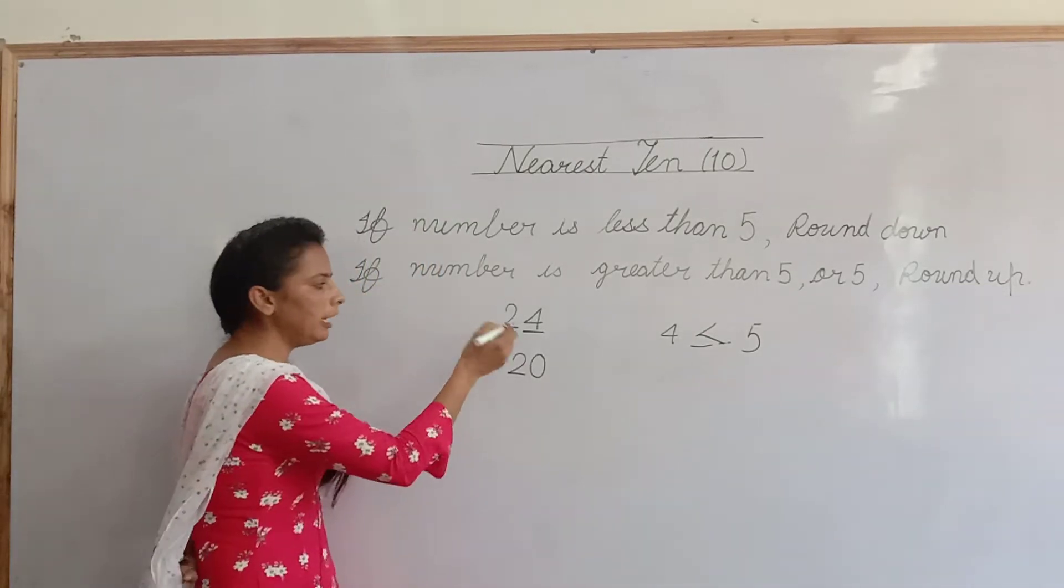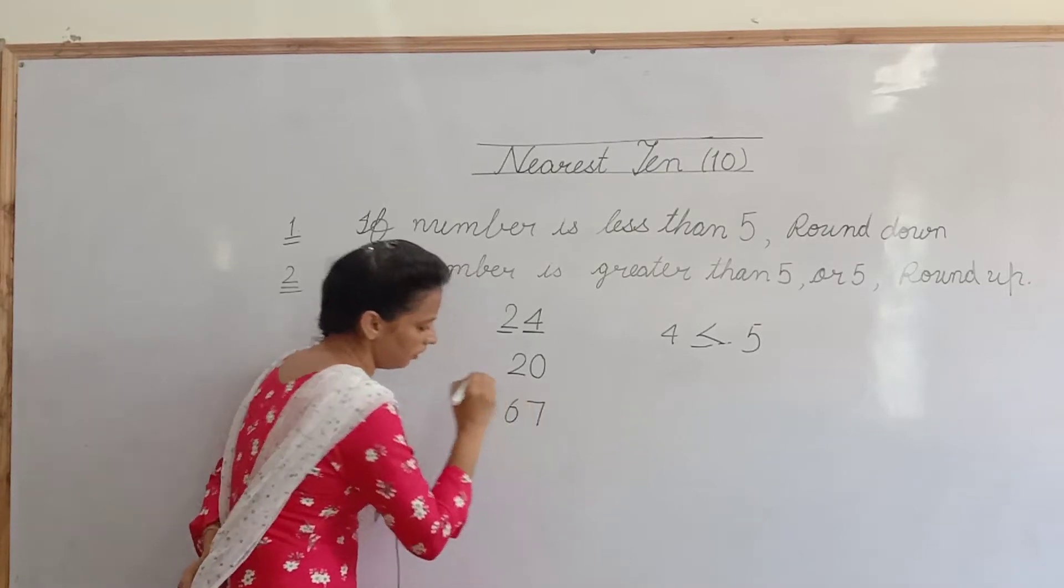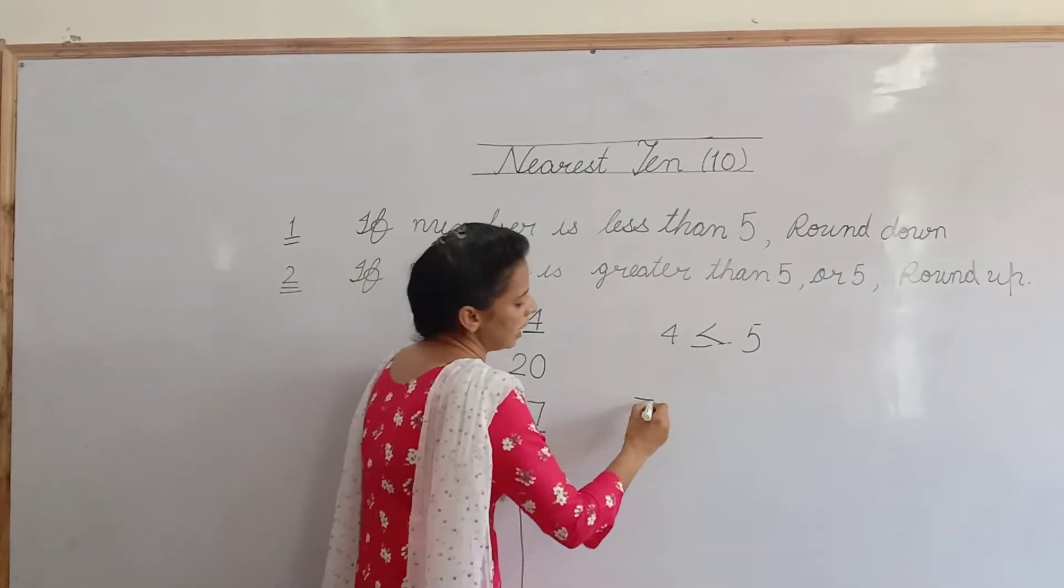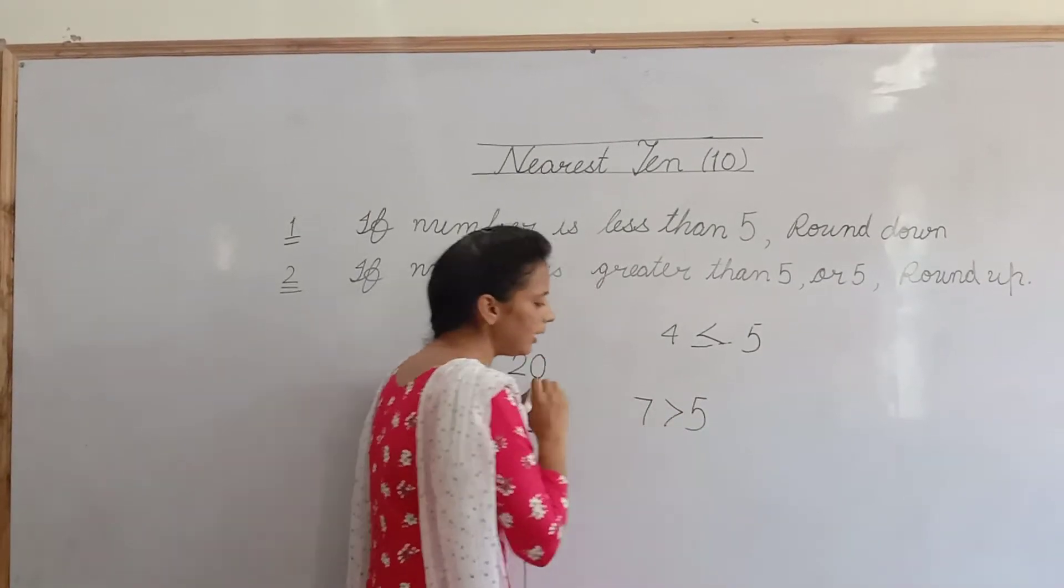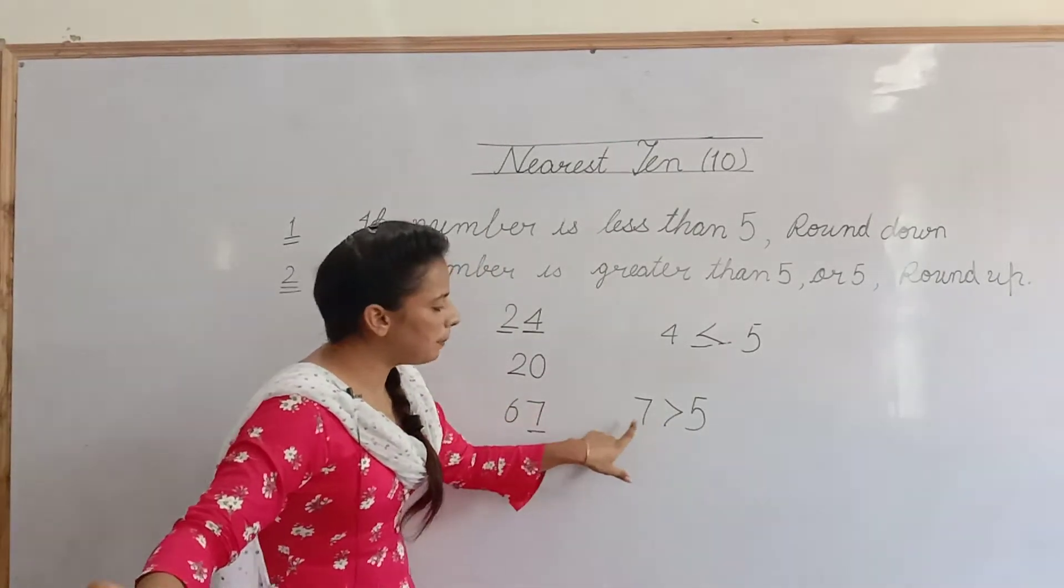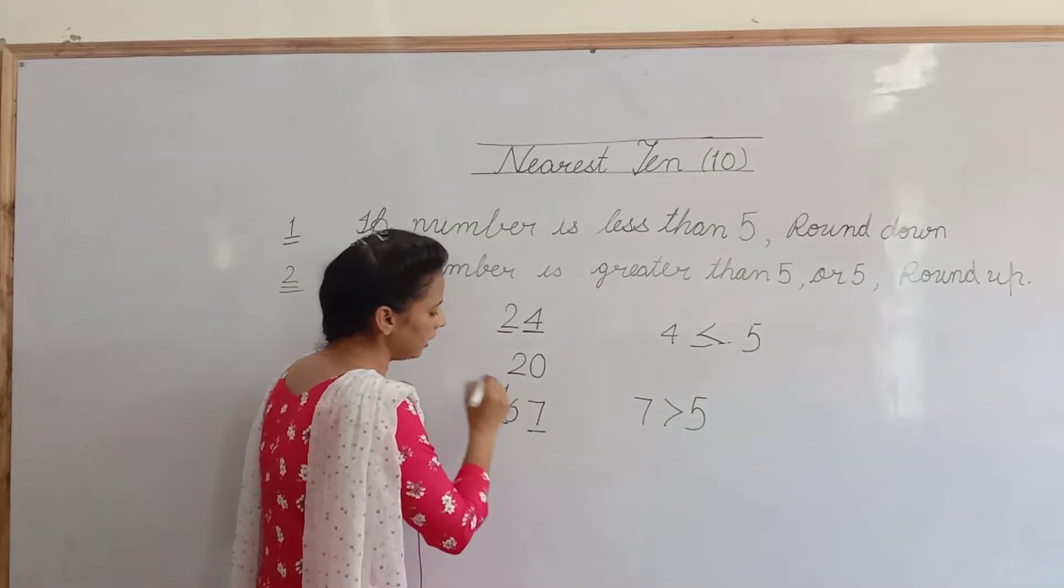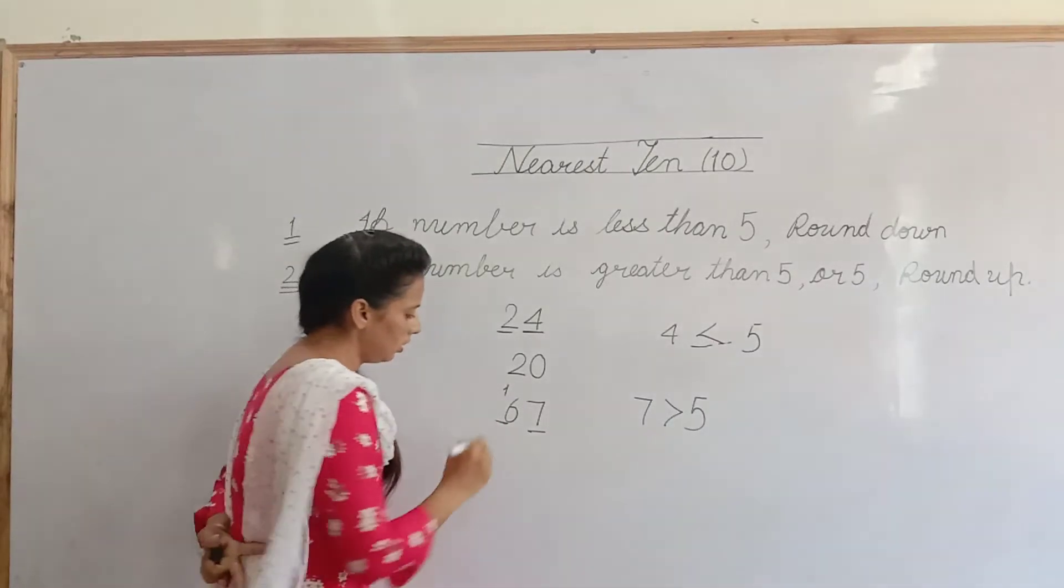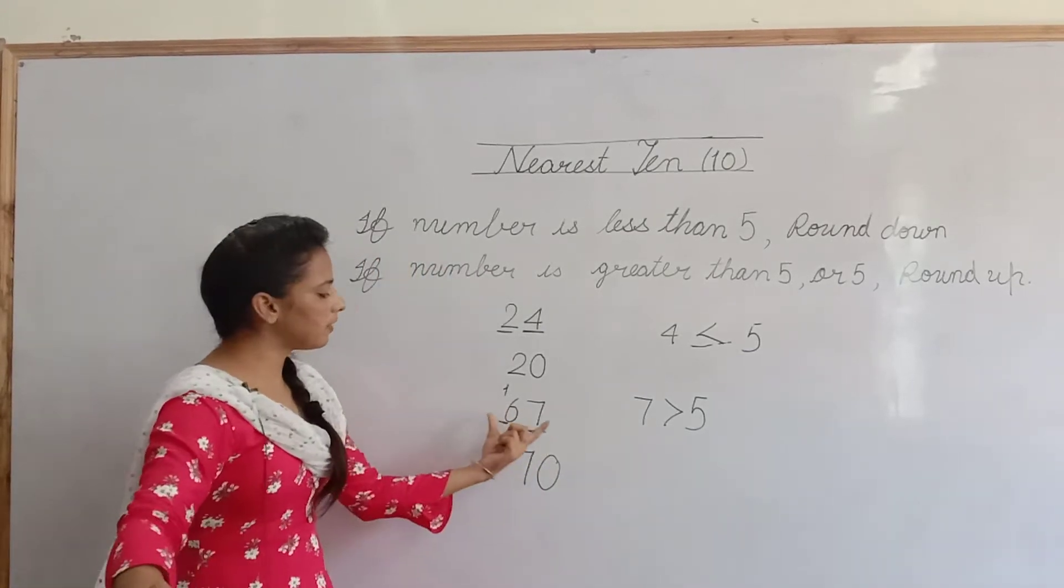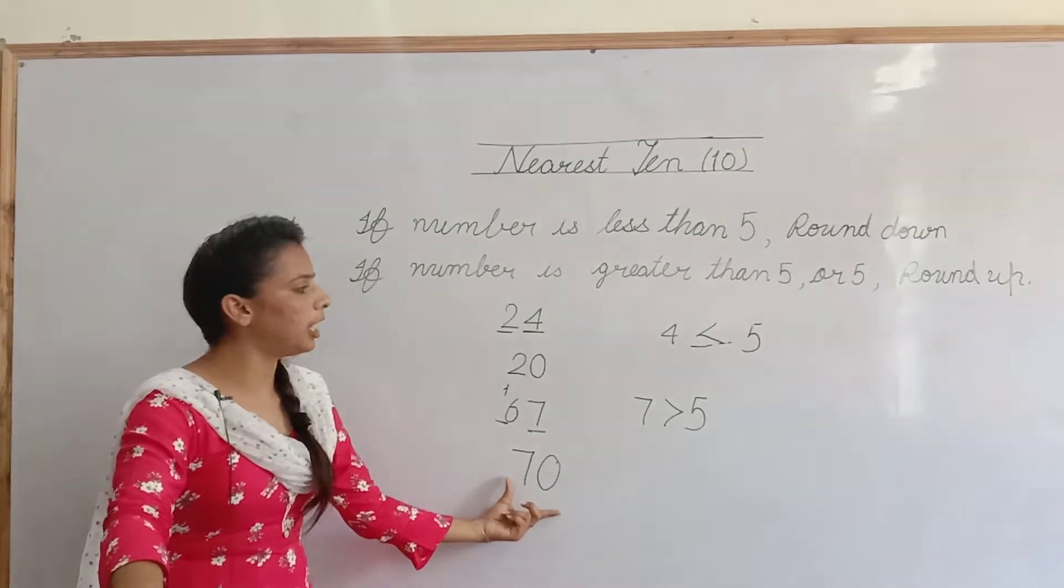اب 3 digit والا نمبر دیکھئے. پہلے 2 digit والا ہی دیکھئے. اب 67. Now, look at one's place. 7. 7 is greater than 5 نا? 5 سے بڑا ہے 7. اگر one's place پہ جو digit ہے, وہ 5 سے بڑی ہے. 5 سے بڑا ہے وہ نمبر. تو ہم 10th place پہ جو نمبر دیا گیا ہے, اس میں کیا add کریں گے? 1. 6 plus 1 equal to 7. And آگے کیا write کریں گے? 0. اب 67 کس کے nearest ہے? 70 کے. Not 60.